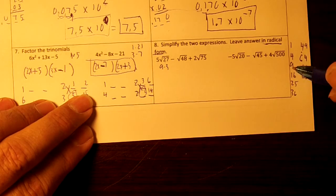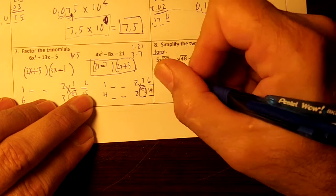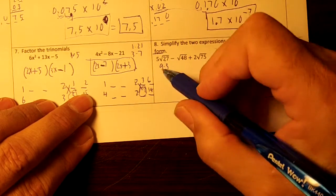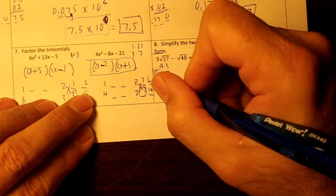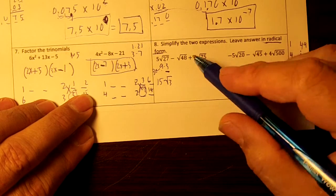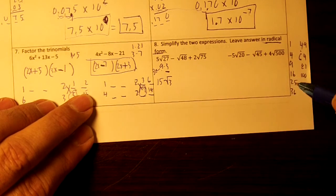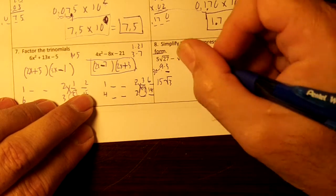The square root of 9 is 3. And we're going to do 3 times 5 is 15. And I'm going to have square root of 3. Now that I'm going to go to the next one, 48. 16 goes into 48, doesn't it?